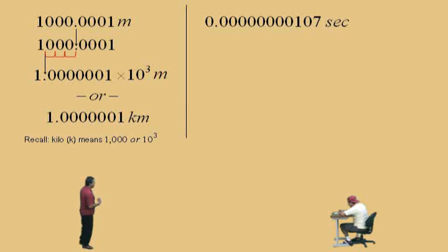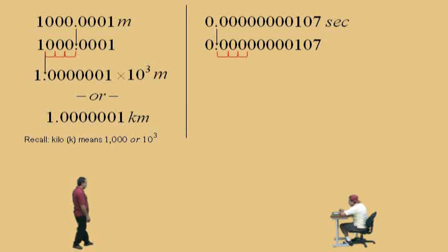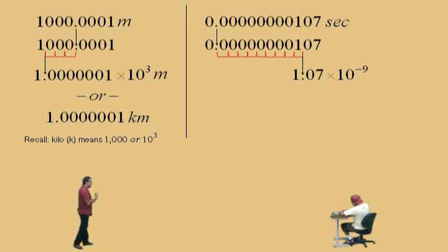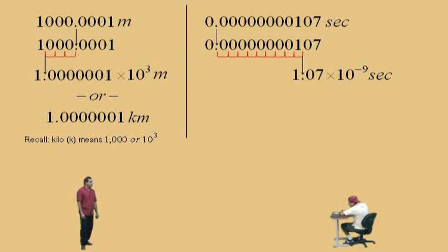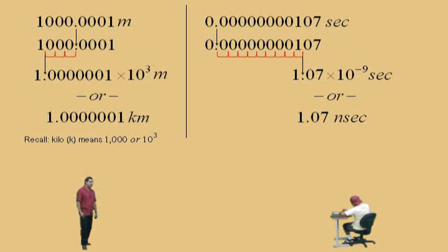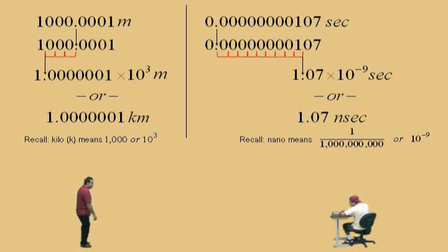This is a very small time. We move the decimal 9 times to get 1.07. We shifted it 9 times, so we multiply by 10 to the negative 9 to move it back to the left 9 times. 10 to the negative 9 corresponds to the metric prefix nano. So 1.07 × 10⁻⁹ seconds equals 1.07 nanoseconds, because nano means 1 billionth, or 10 to the negative 9. That completes our lecture on scientific notation — be sure you practice, and we'll see you again soon!